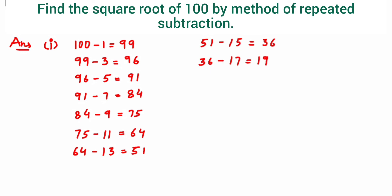Next 36 minus 17, this is equal to 19. Again 19 minus 19 is equal to 0. See, we got 0 here, it means the subtraction what we have done is correct.